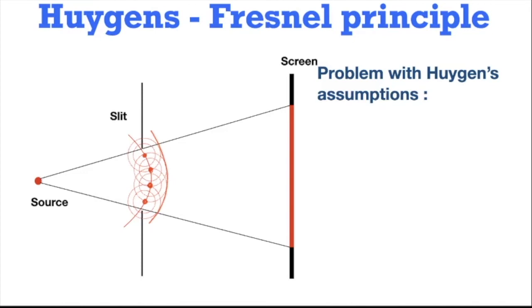Huygens principle could successfully explain the idea of reflection and refraction, but when it came to diffraction of light, there were few problems. Let us take the example of a source which is passing through a narrow slit and now apply Huygens principle to it. According to Huygens principle, the new position of the wavefront will be given by the secondary wavelets envelope. As time progresses, the wavefront will keep on moving forward, and when it reaches the screen, it will give a constant area of illumination with a strong boundary between geometric shadow and the illuminated portion.